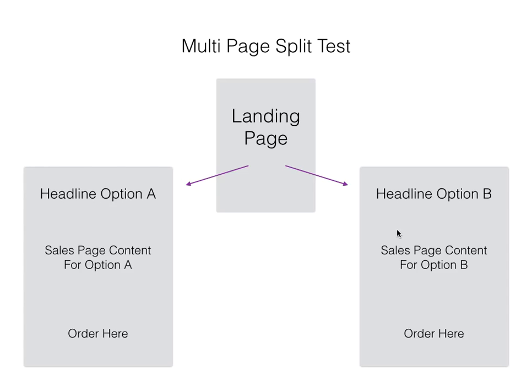These are very different selling formats and you want to know which one works best for your business. You send all of your traffic to the landing page, which then splits that traffic and sends some people to your traditional sales letter and some people to your video sales letter. When they place an order it calculates your click-through rate and earnings per click based on which version they have seen.